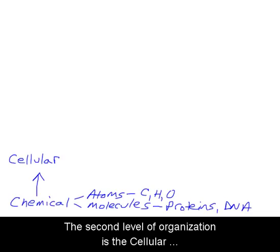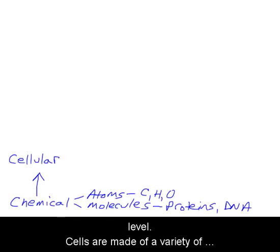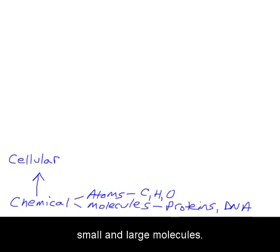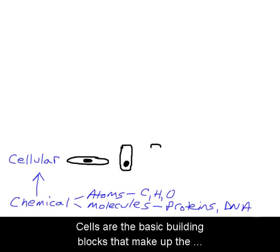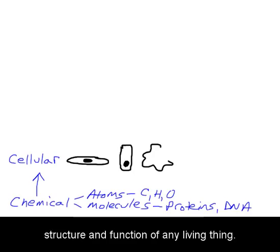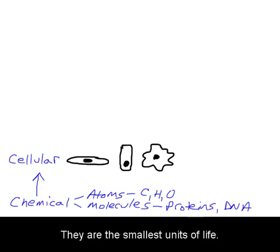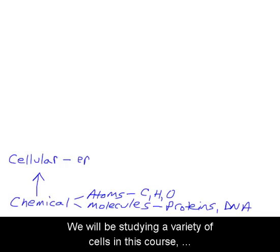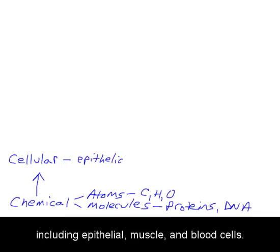The second level of organization is the cellular level. Cells are made of a variety of small and large molecules. Cells are the basic building blocks that make up the structure and function of any living thing. They are the smallest units of life. We will be studying a variety of cells in this course, including epithelial, muscle, and blood cells.